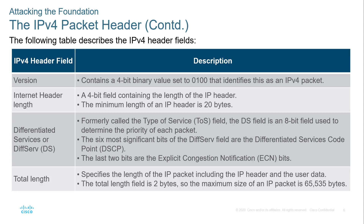The binary value 0100 identifies the data packet as an IPv4 packet. The header length is a 4-bit field containing the total length of the IP header, normally about 20 bytes. The differential services (DS) field, formerly called the type of service field, is an 8-bit field used to determine the priority of each packet when dealing with QoS or weighted routing. The six most significant bits are called the differentiated service code point (DSCP); the remaining two bits are the explicit congestion notification (ECN) bits.